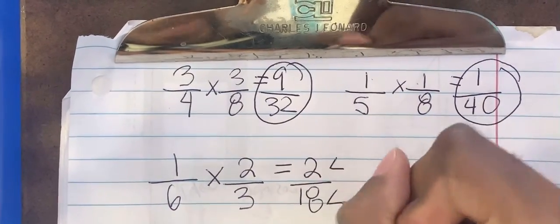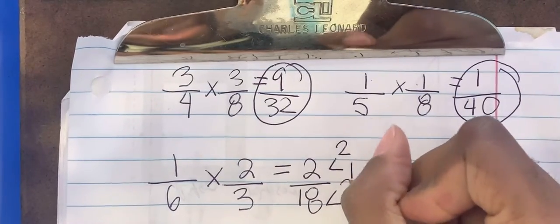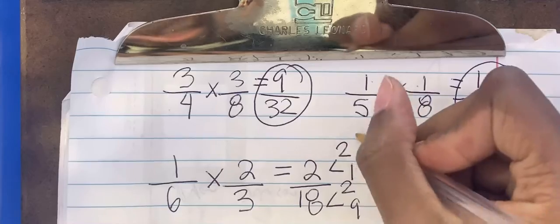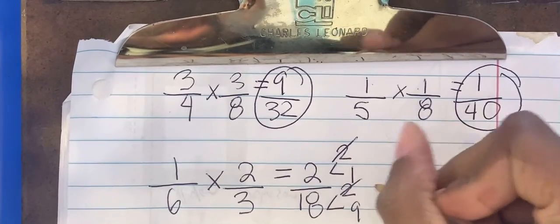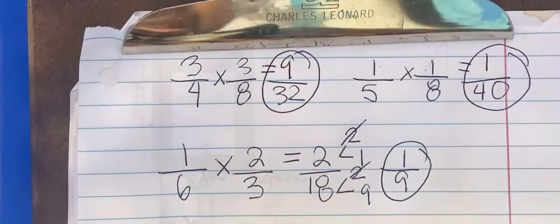Now we can factor this out. The factors of 2 are 2 and 1. The factors of 18 are 2 and 9. The 2s cancel out. We're left with 1 over 9. This is fully simplified. Let's do another problem.